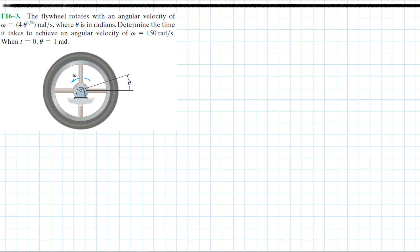In this problem, a flywheel rotates with an angular velocity of omega equal to 4 times theta to the power one-half. This is the angular velocity with respect to angular position in radians per second, where theta is in radians. We need to determine the time it takes to achieve an angular velocity of omega equals 150 radians per second.